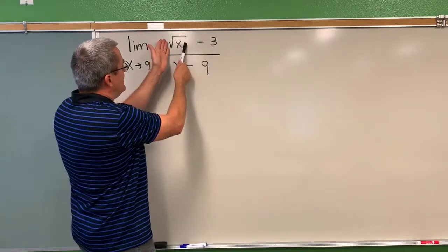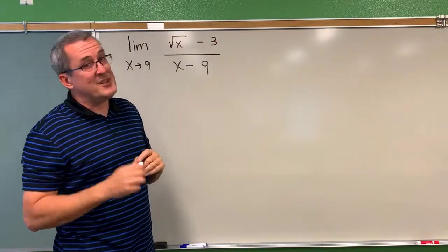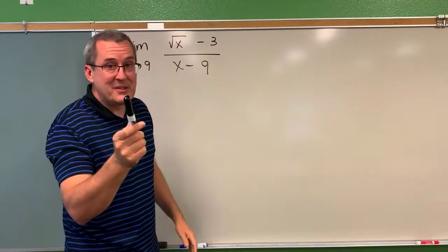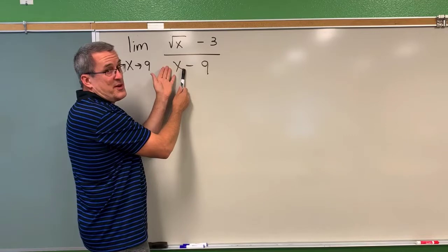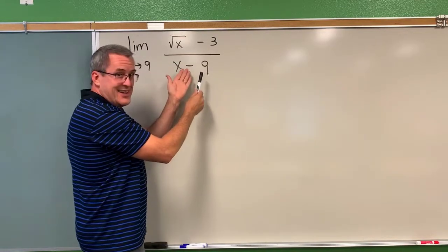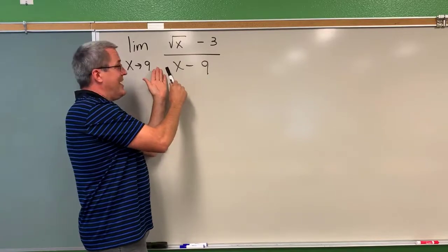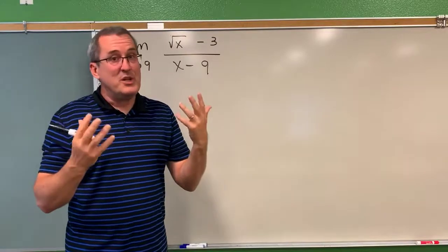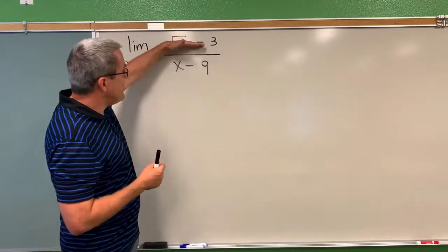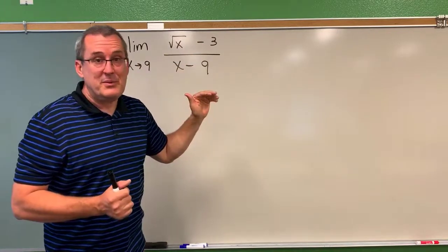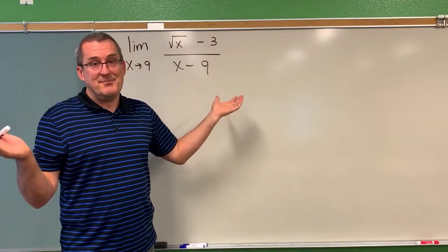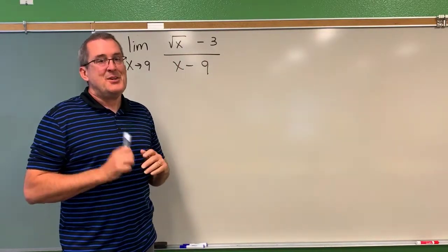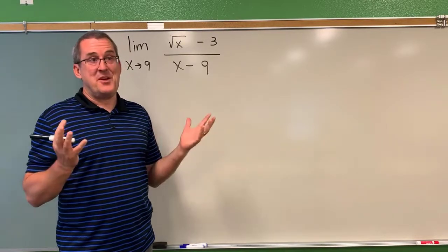If you take a number really close to 3 and subtract 3, you get a value really close to 0. And the denominator — if you take a number really close to 9, like 9.0000001 or 8.999999, and subtract 9 — that denominator produces a number that's really, really small. So the numerator is really small and the denominator is really small. This one's harder to imagine in a mental math kind of way, so we're going to jump on technology and see what's happening.